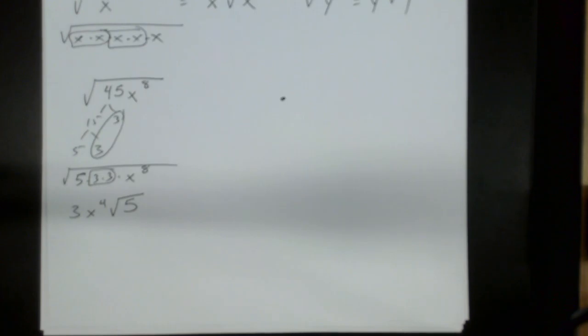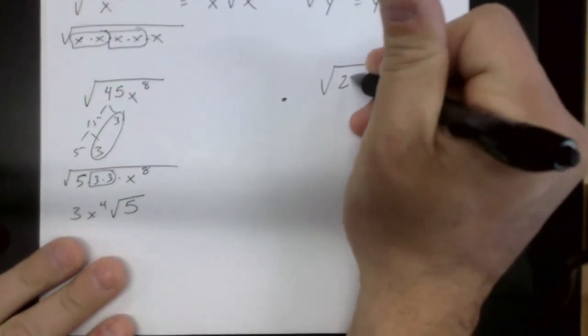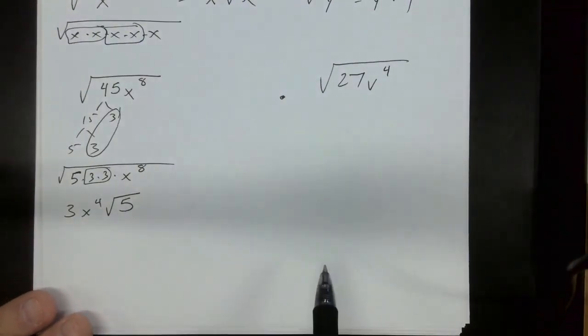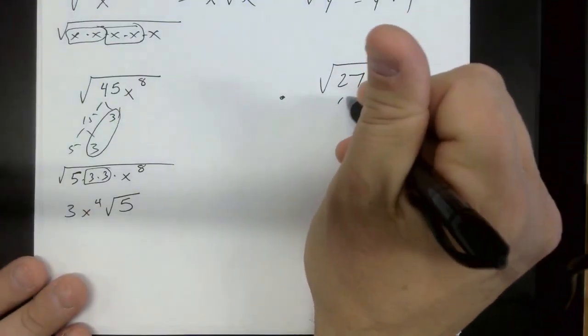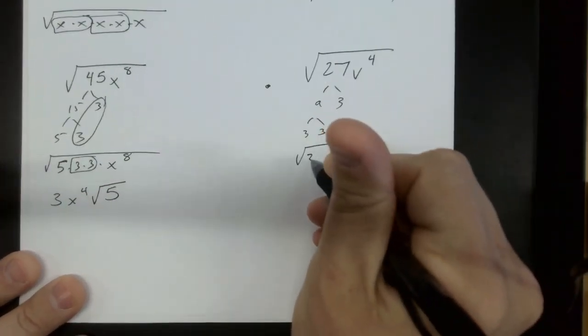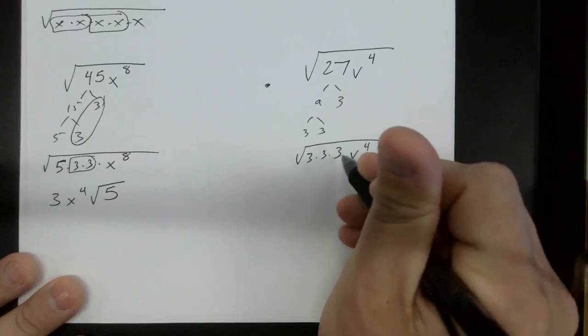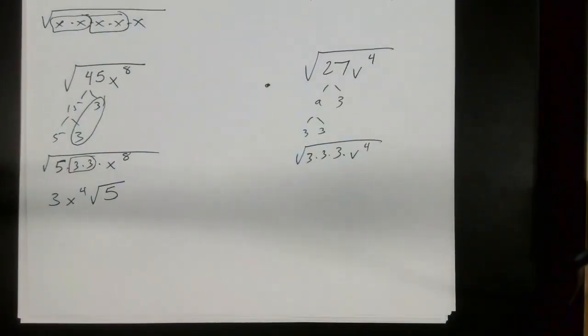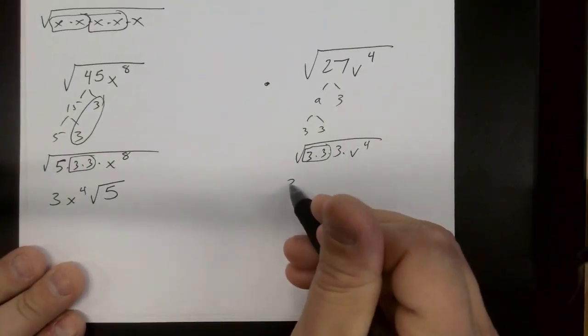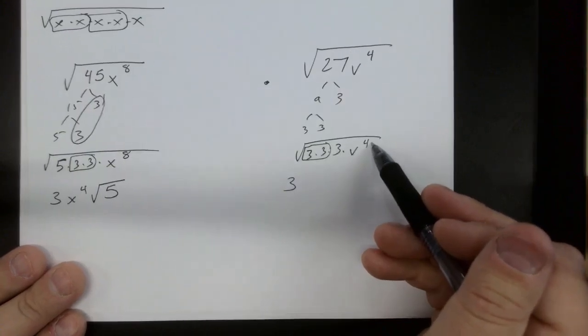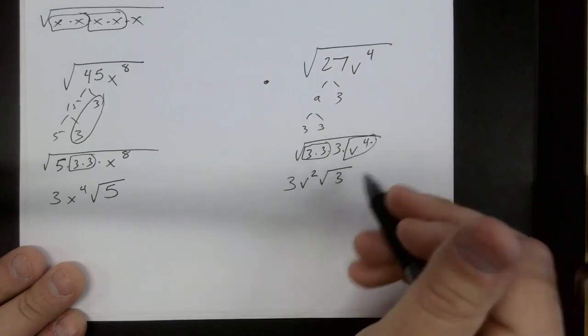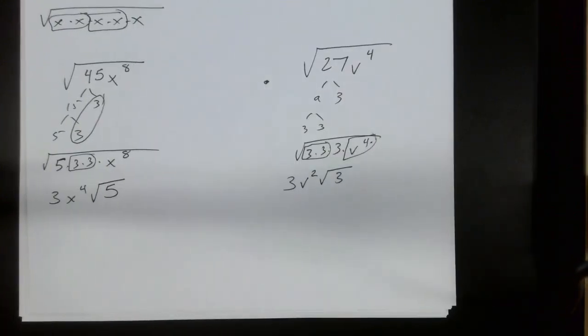Let's do another one. Let's say we had the square root of 27v to the 4th. First thing I would always do is I'm going to factor my 27: 9 and 3, 3 and 3. So underneath my square root I'm going to have three 3s and a v to the 4th. I'm going to look for my pairs. There's a pair. So we're going to bring a 3 out, and how many times does 2 go into 4? 2 times. So we're going to bring v squared out, which means we're just going to have a 3 left over underneath.